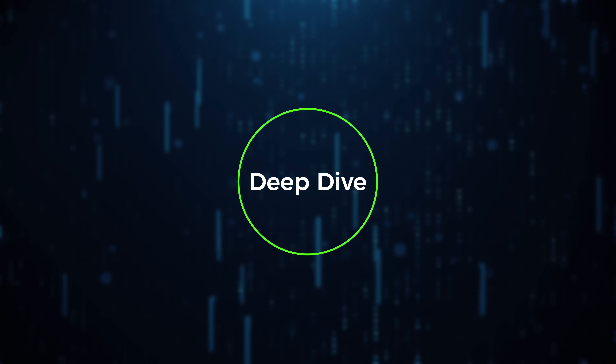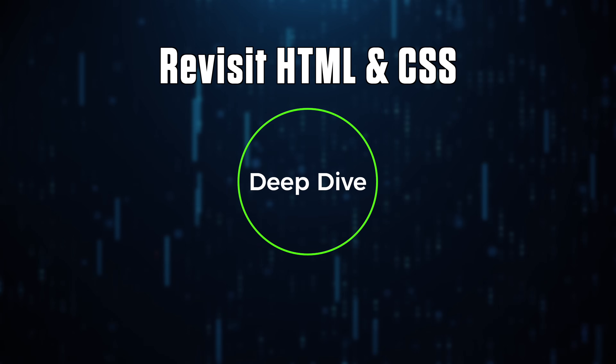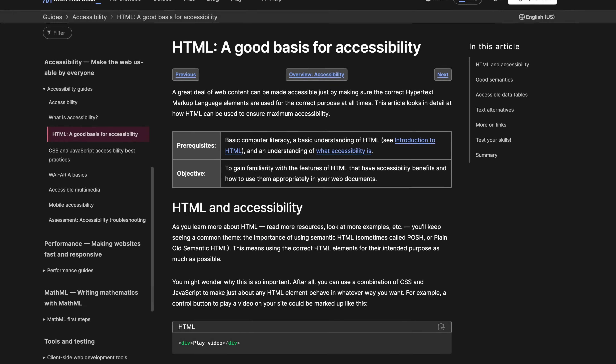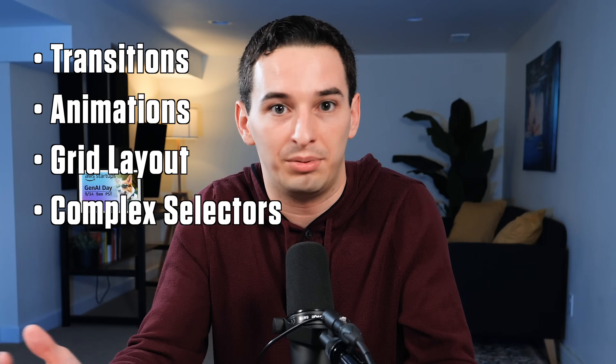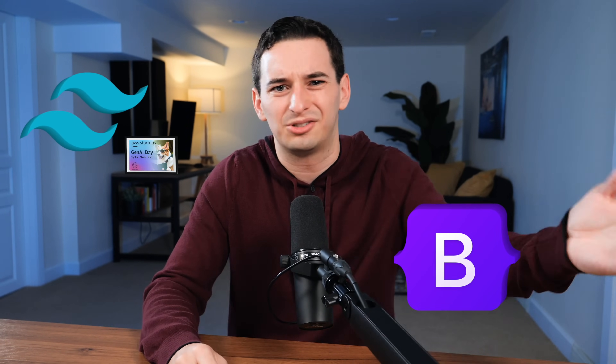Now you have an incredible website with some interactivity, but it's time to level up and revisit some items we brushed over earlier. With HTML, I would focus on how to write accessible HTML, and with CSS, I would focus on responsive design. If you're particularly interested in CSS, you can learn things like transitions and animations, the grid layout system, and how to write more complex selectors using pseudo-classes and pseudo-elements. You can also use this time to learn CSS frameworks like Bootstrap and Tailwind, or preprocessors like Sass or Less — though I don't think you have to; I just wanted to mention it in case you're super interested in CSS.